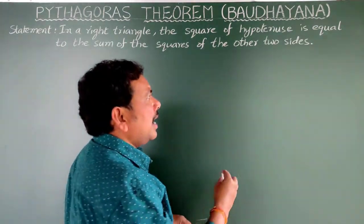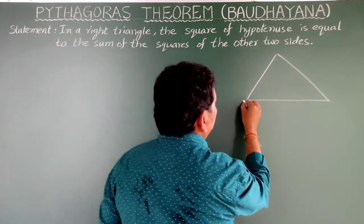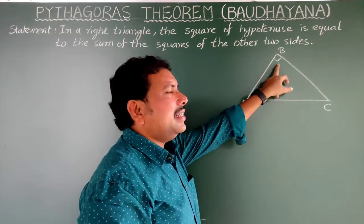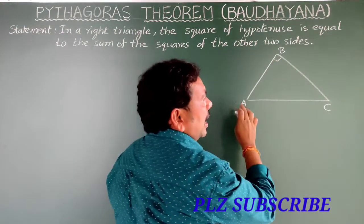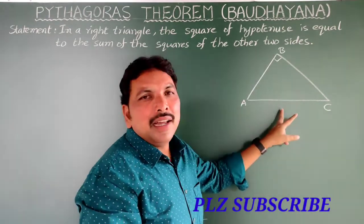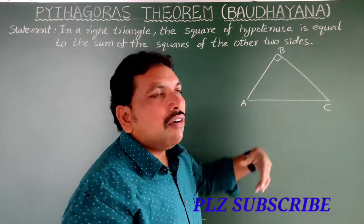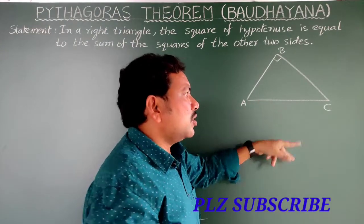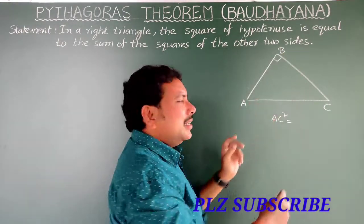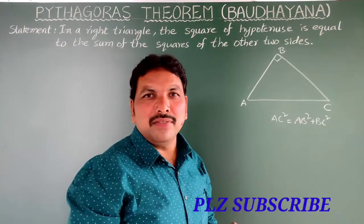First, draw the right-angled triangle. This is the right-angled triangle ABC, right-angle is at B. Here AB, BC, and AC are the sides. AC is called the hypotenuse because it is opposite to the right angle — it is the biggest side. In this triangle, what we have to prove? The square of the hypotenuse, which means AC² is equal to the sum of the squares of the other two sides: AB² + BC².